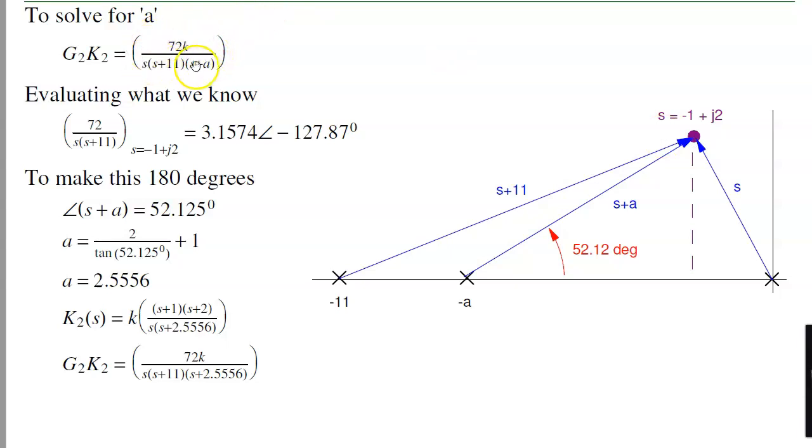So to do that, I know that G2 times K2 at minus 1 plus J2 is minus 1. Take the part that I know. Evaluate it and I get minus 127 degrees. Meaning that the angle of s plus A must be 52.12 degrees. Whatever it takes to make this 180. Now that I know this side, I can find A. Tangent at 52 is opposite over adjacent. Opposite is 2. Adjacent then is 2 over tangent at 52 degrees. And then A is that value plus the real part, plus 1. So there's A. Gives me A is 2.55.